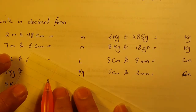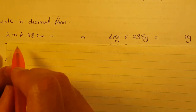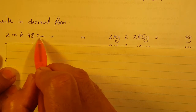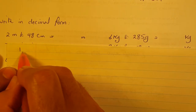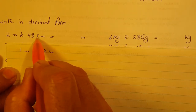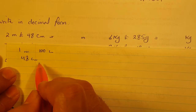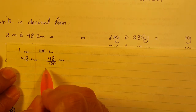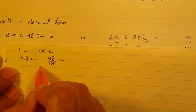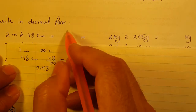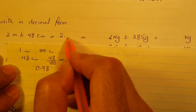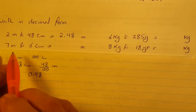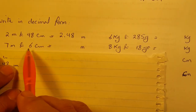Now, write in decimal form: 2 meters and 48 centimeters written in meters. One meter is 100 centimeters, so 48 centimeters equals 48 over 100 meters, which is 0.48. Therefore 2 meters and 48 centimeters equals 2.48 meters.